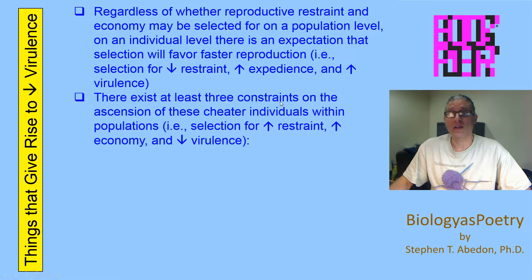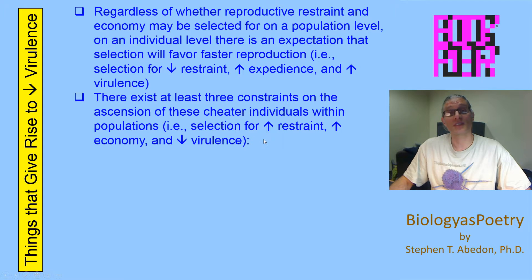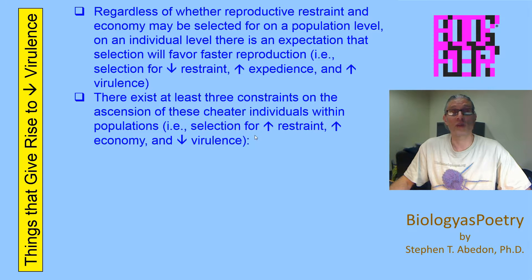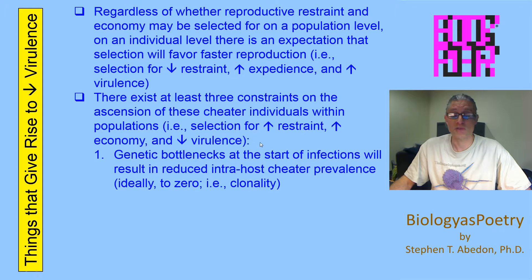However, there are constraints on this evolution of ever-greater virulence — constraints on the ascension of cheater individuals within populations. This would be selection for greater restraint, selection for greater economy, and selection for decreases in virulence associated with individuals. This assumes that virulence is a function entirely of the rate of replication of individuals, with higher rates of replication resulting in greater virulence and lower rates resulting in less virulence, as they occur within individual host organisms.